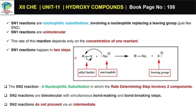The rate of the reaction depends only on the concentration of one reactant. The SN1 reaction is a 2-step reaction. The first step is bond breaking and the second step is bond making.